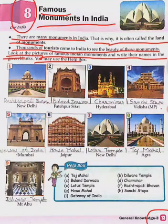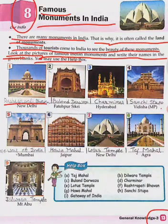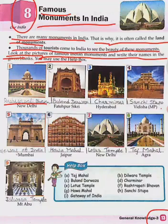You may use the help box. Our first monument is Rashtrapati Bhavan. The spelling is R-A-S-H-T-R-A-P-A-T-I, Rashtrapati, then B-H-A-V-A-N, Bhavan. Rashtrapati Bhavan is located in New Delhi.